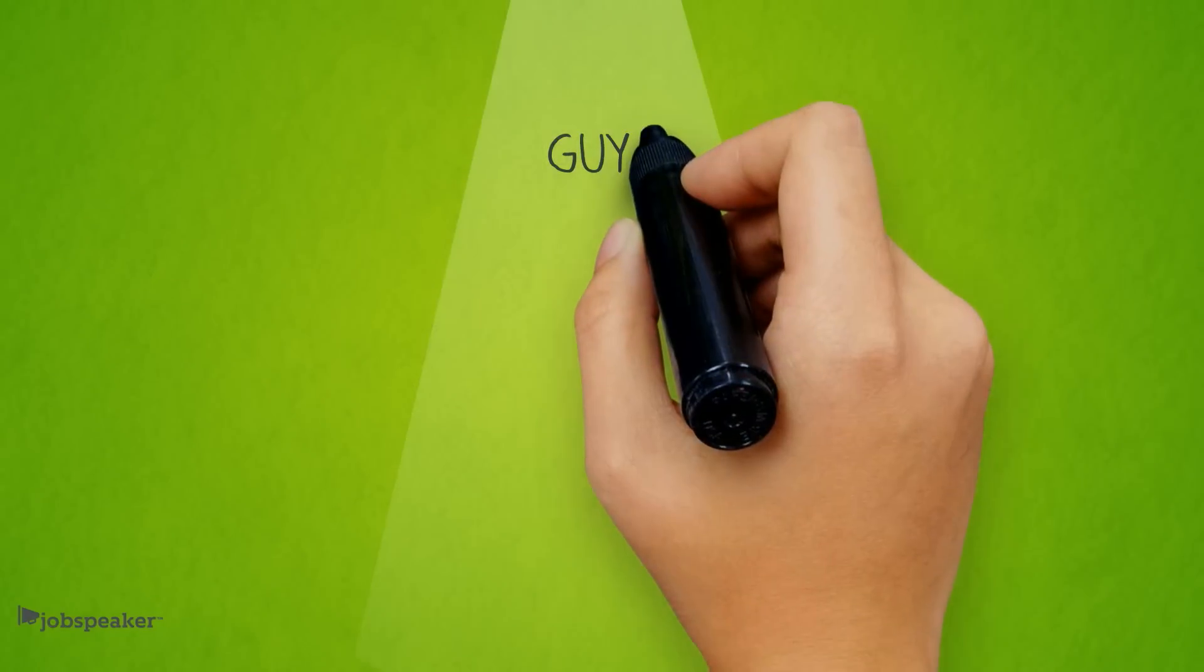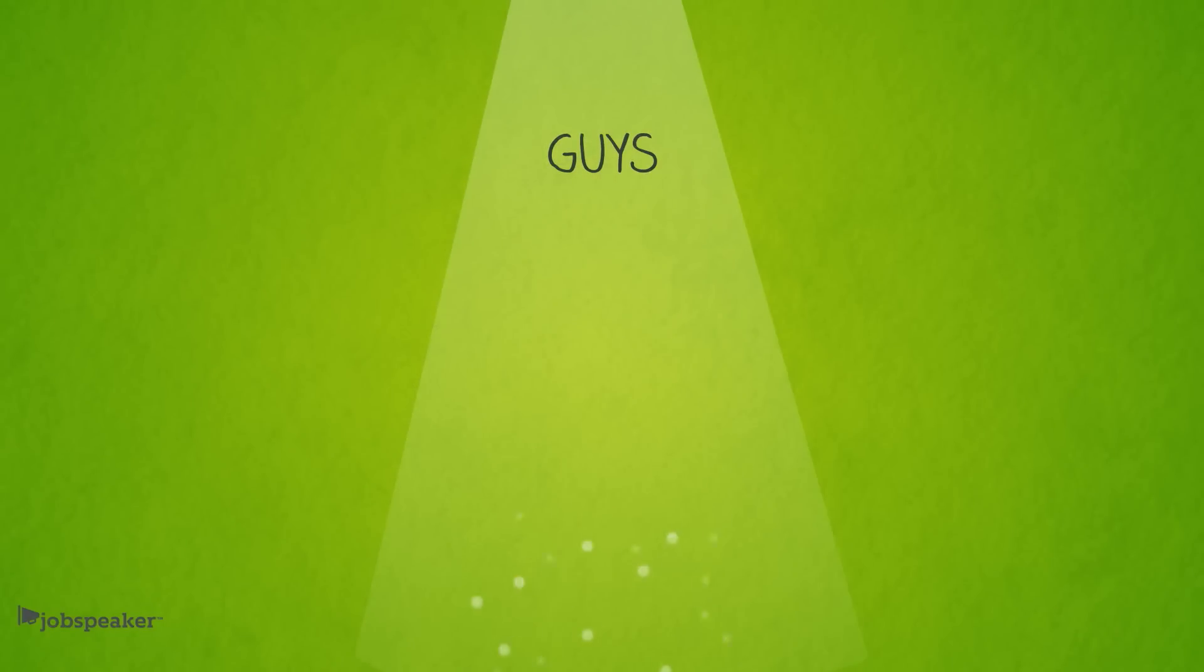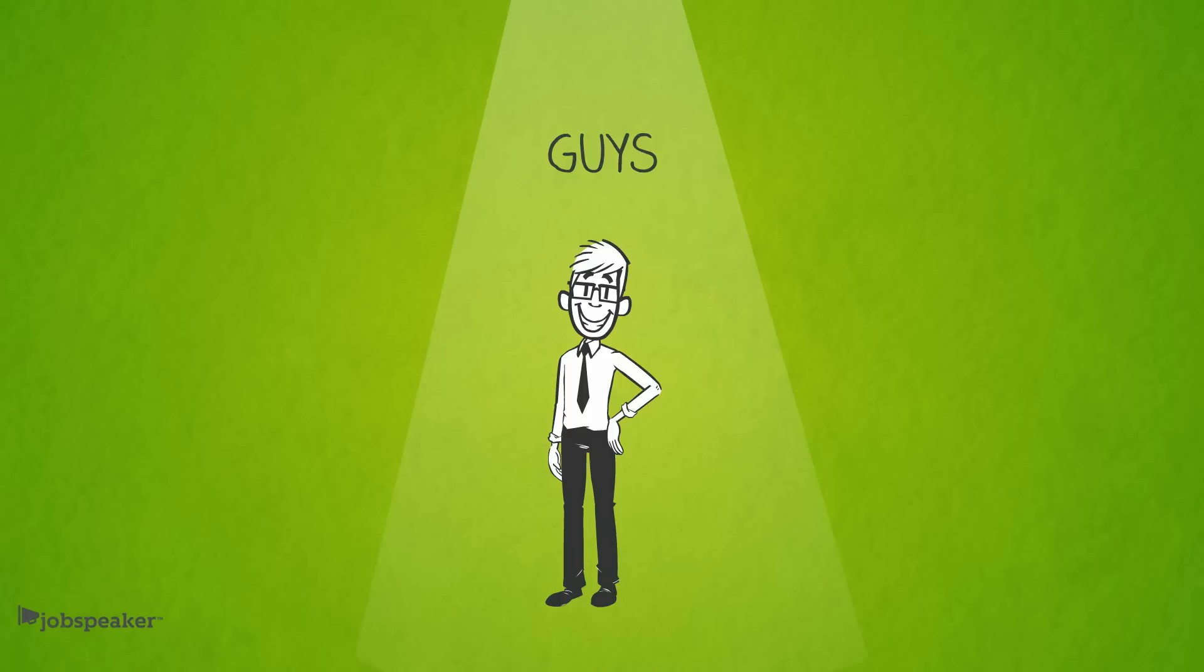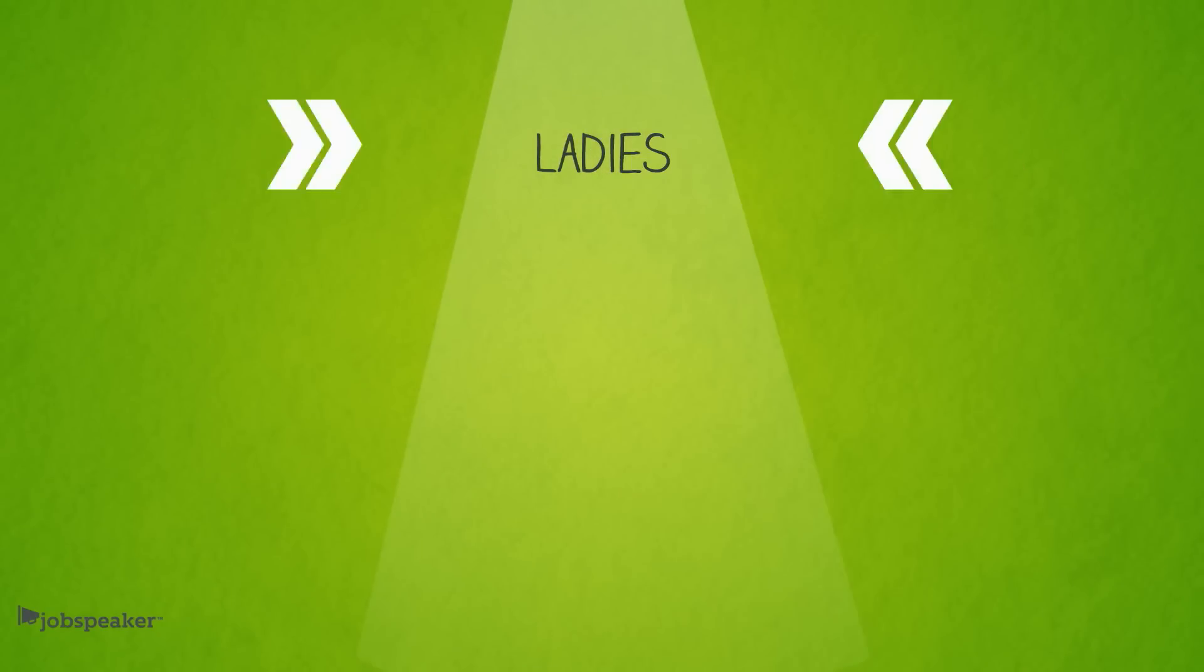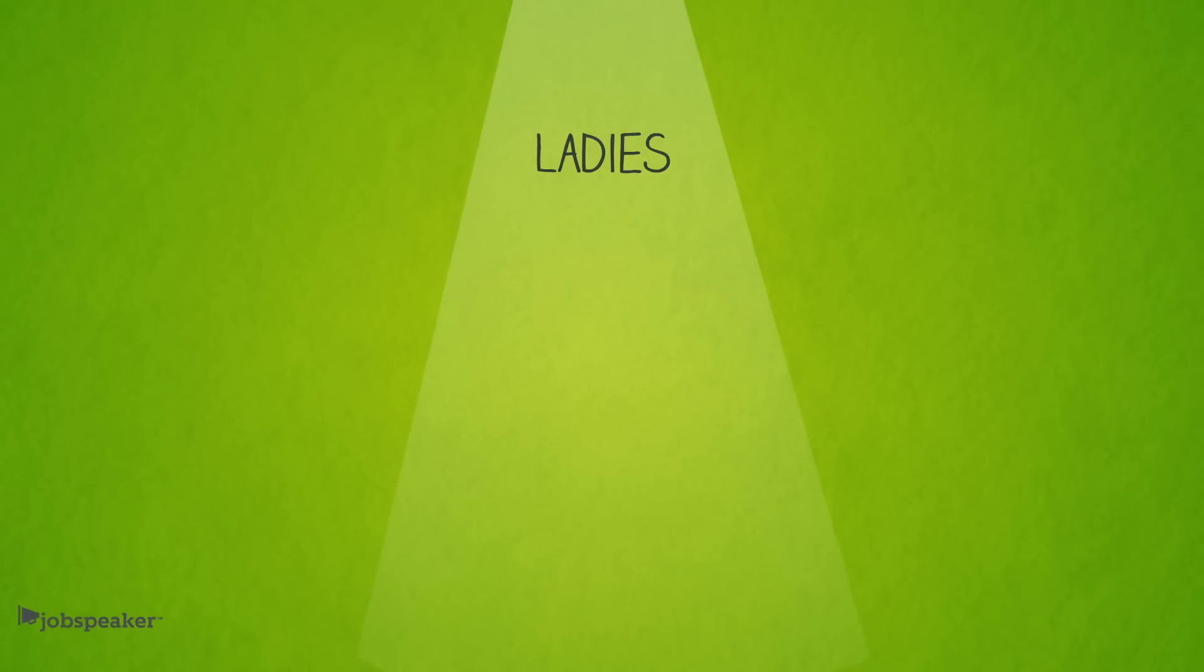Guys, wear a suit or at least a shirt and tie. Keep it conservative, no loud colors. Make sure it's clean and ironed. You don't want to give a bad first impression. Ladies, wear a pant suit or skirt suit. Keep it simple, nothing bright, short, or sheer. Make sure your clothes are clean, ironed, and pressed.